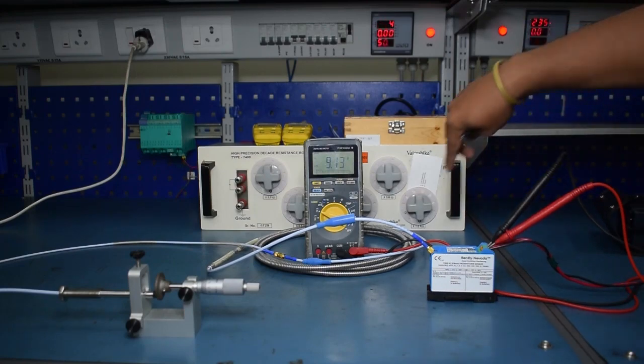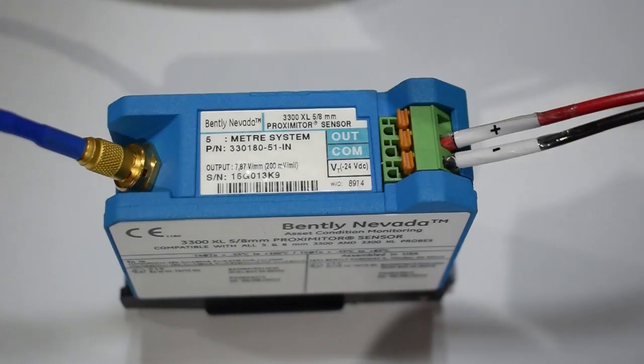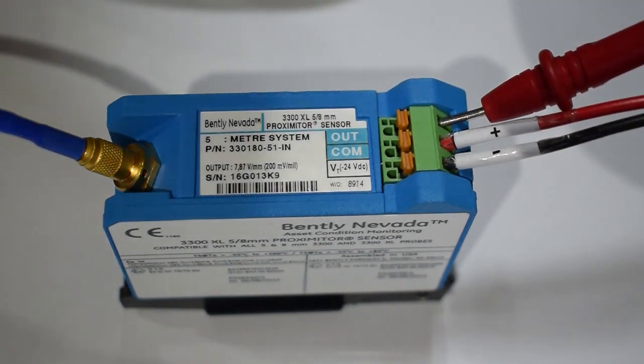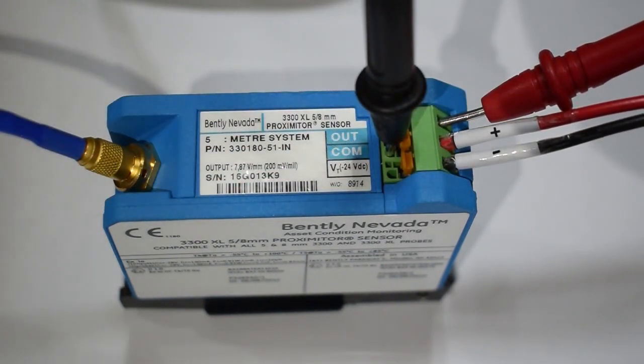And connect the multimeter leads to the output terminal while connecting 24 volts DC supply. Ensure the power supply polarity is shown in video. The multimeter leads are connected to the out and com terminals of the proximeter.